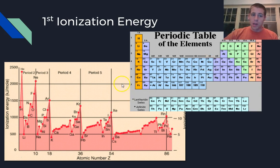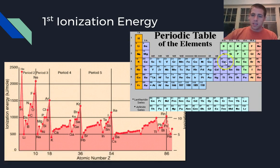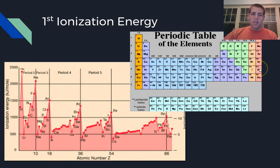If we look at a specific period, I like this graph because it breaks it up into the different periods. As you go from sodium to argon, the overall trend is that ionization energy is increasing, which is consistent with what we just described. As we go down a group — look at helium, neon, argon, and krypton — the ionization energy is going to decrease because our radius is increasing. It gets easier and easier to remove that outside electron.